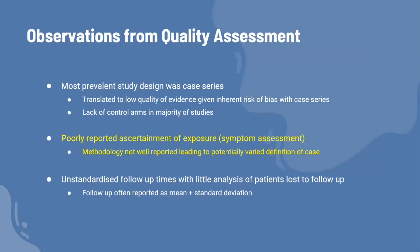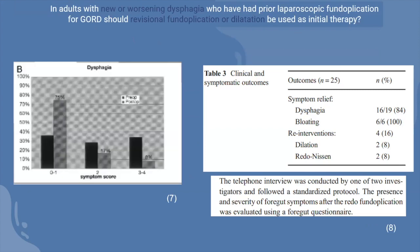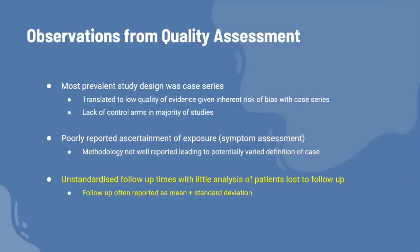There was also poorly reported ascertainment of exposure — the methodology for assessing whether someone had symptoms varied considerably, as discussed earlier, which affects the quality assessment because it impacts the definition of what constitutes a case. Additionally, follow-up times were unstandardized with little analysis of patients lost to follow-up. Follow-up was often reported as a mean or mean plus standard deviation, making it difficult to evaluate failure rates and symptom recurrence without a standardized time frame.